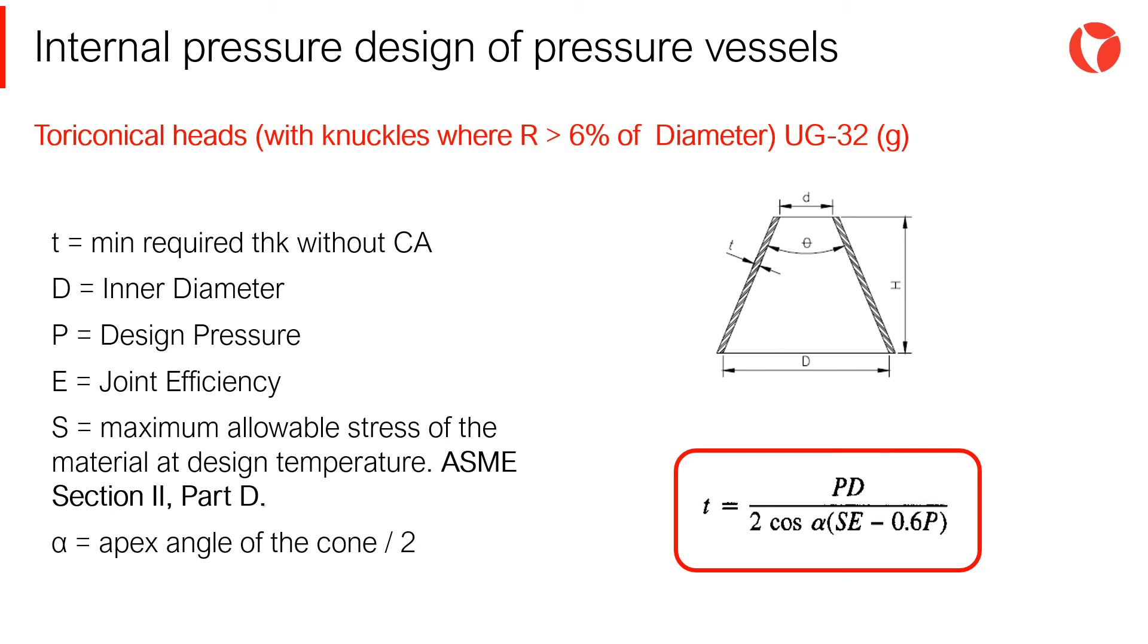Knuckle radius will not be smaller than 6% of the diameter of the cylinder, or 3 times the thickness of the cone. The thickness calculation method for this transition follows the same considerations as for transitions without knuckles, using DI instead of D.